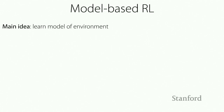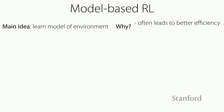The main idea of model-based reinforcement learning is to learn a model of the environment. Why do we want to do this? There are two main reasons. First, model-based RL tends to lead to better sample efficiency — if you care about learning with fewer environment interactions, fitting a model and using it to optimize your policy can reduce the amount of data needed. Second, the model can be reused for different tasks and different objectives.